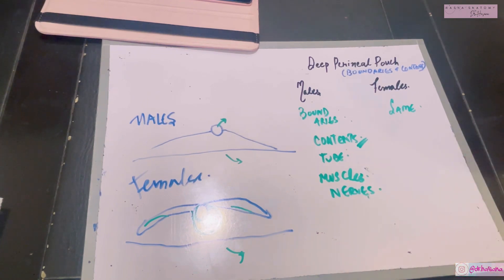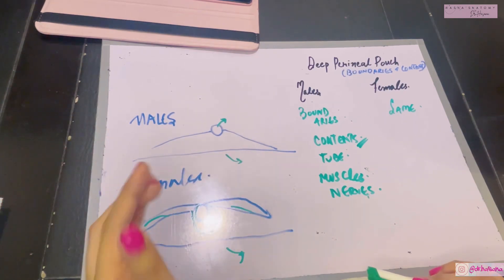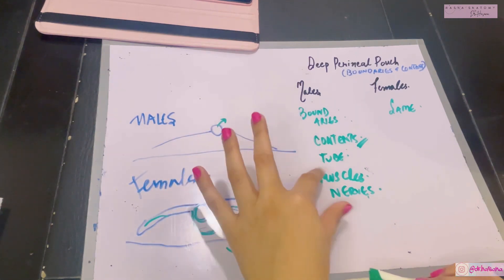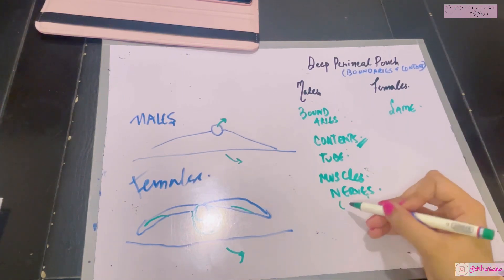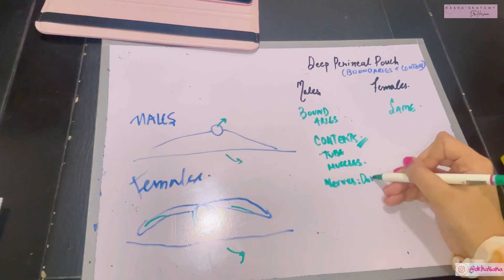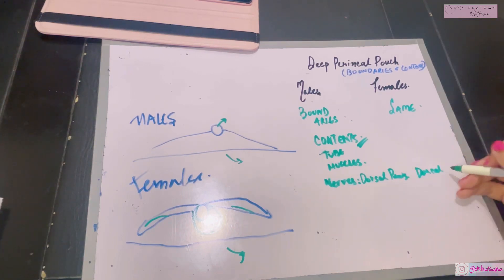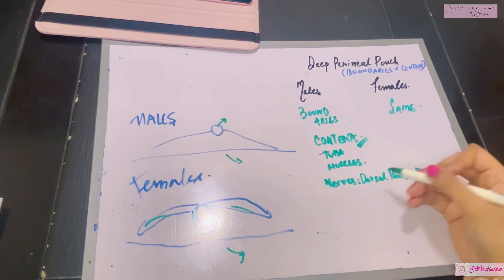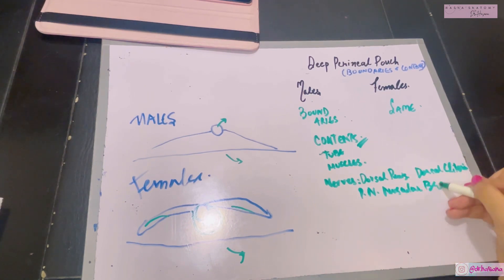Now let's talk about the nerves of the deep perineal pouch. The nerves in both males and females and the vessels are derived from the pudendal canal, which contains the pudendal nerve and the internal pudendal artery — your entire perineum derives its neurovascular supply from these. The pudendal nerve divides into two terminal branches within the deep perineal pouch. Terminal branch one is the dorsal nerve of the penis in males — and in females, just change the name to the dorsal nerve of the clitoris. The other terminal branch is the perineal nerve, which gives muscular branches within the perineal pouch, and these are the same for both males and females.